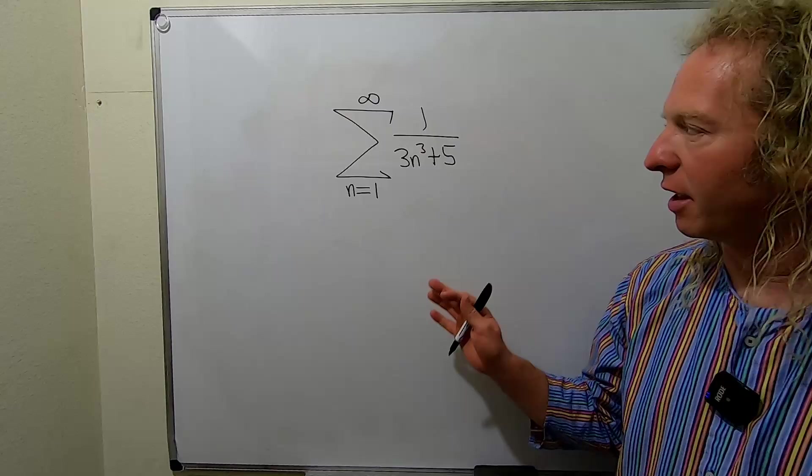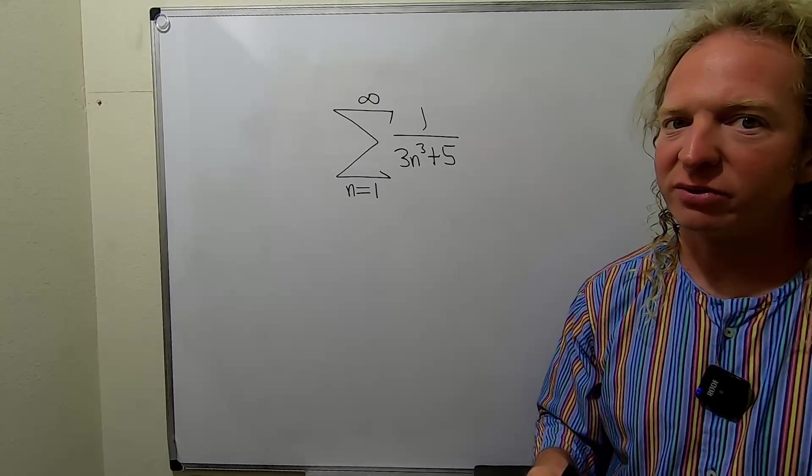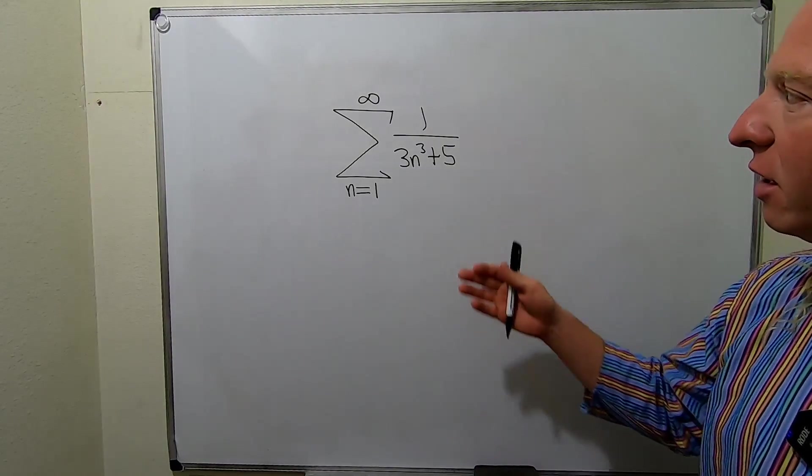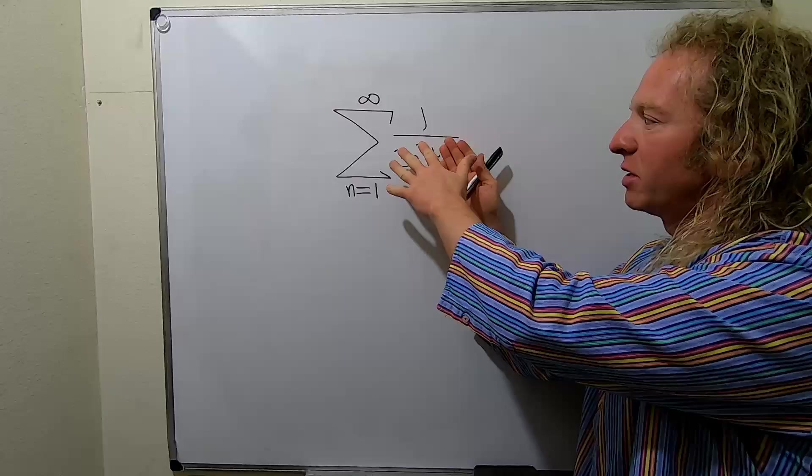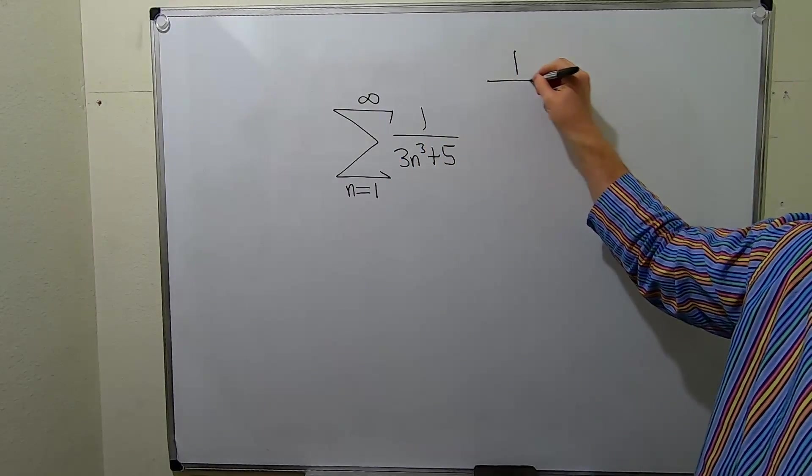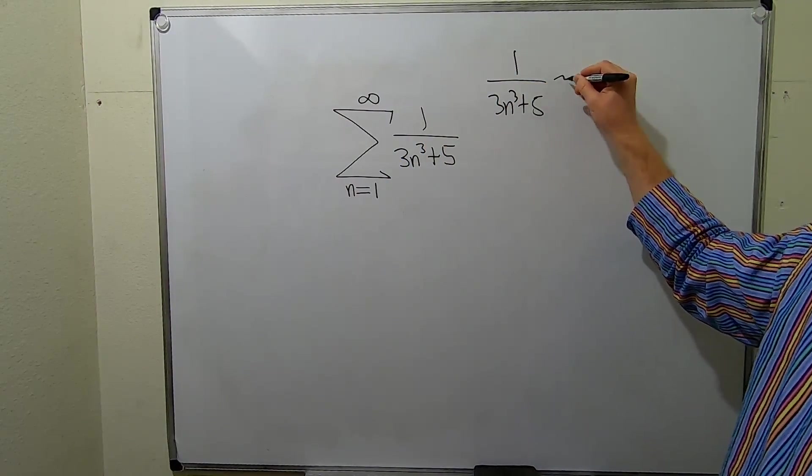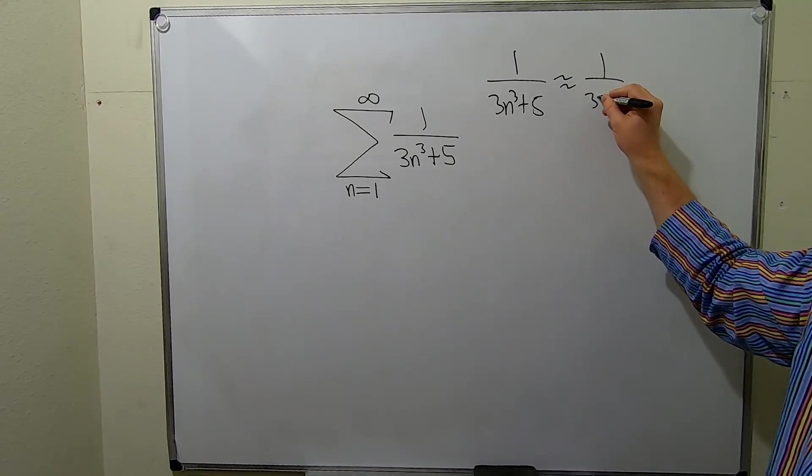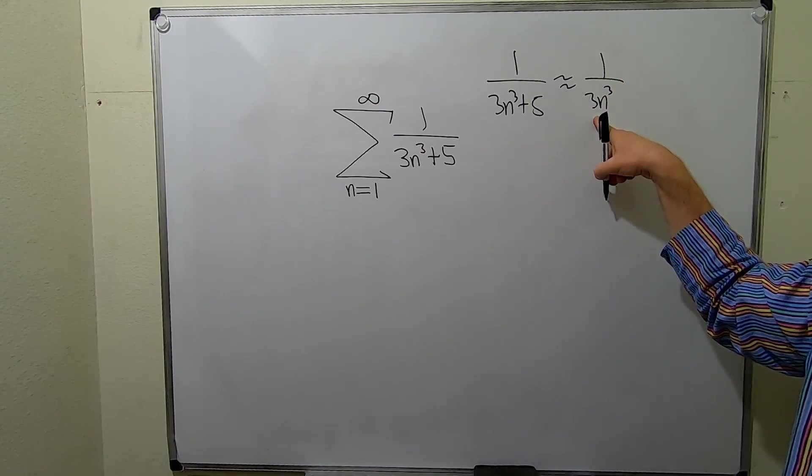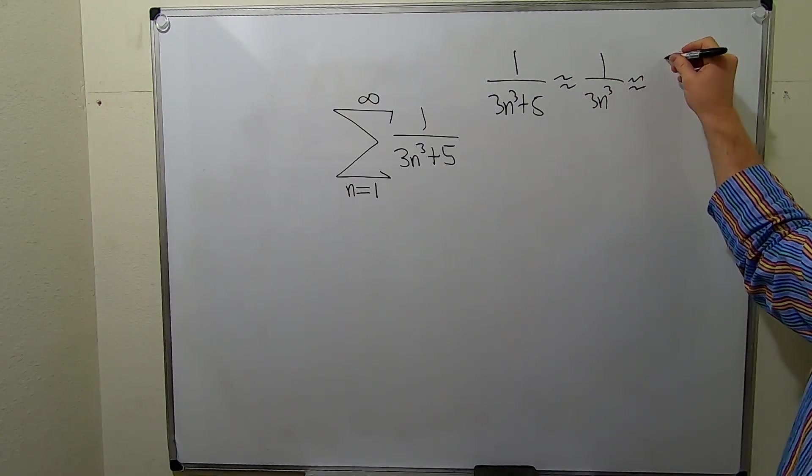You'll notice that the 5 is irrelevant, so for big values of n you can pretty much ignore the constants. So you can think of this term here as this here. And this 3 is not really going to matter, so this is pretty much this.